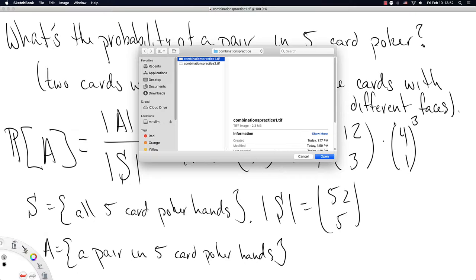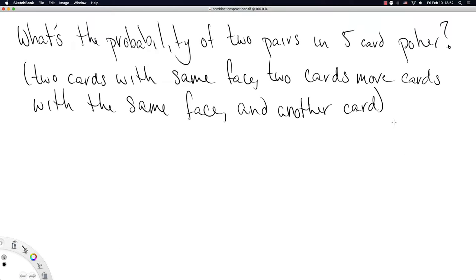Let's try a slightly more complicated example. We'll do a similar thing. We're interested in calculating the cardinality of A, where A here is the set of five-card hands with two pairs.